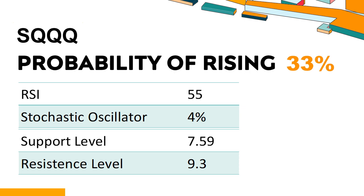The current stochastic oscillator of SQQQ is 4%. When the indicator falls below the 20 level, it is usually considered oversold, indicating that a price rebound or recovery is likely for the stock. An oversold condition occurs when the stock price falls too fast and too much in a short period of time, which may indicate that the selling pressure has exhausted.